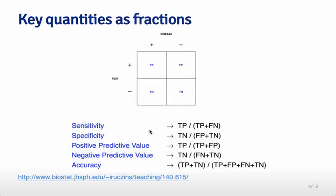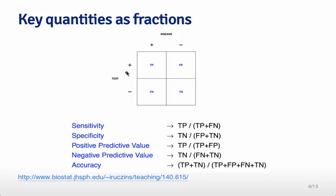These can be written as fractions. Sensitivity is the true positives divided by the true positives plus the false negatives — among all people who are diseased, what fraction did we correctly identify? The positive predictive value is the true positives divided by the true positives plus the false positives — looking at only the positive tests, what fraction did we get right? You can similarly compute fractions for specificity, negative predictive value, and so forth.